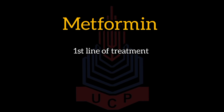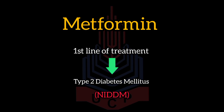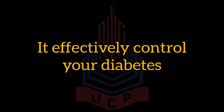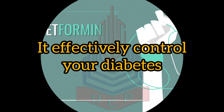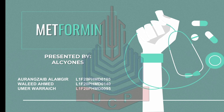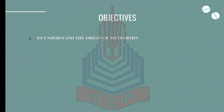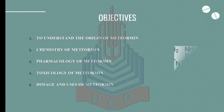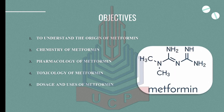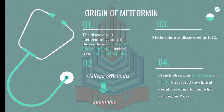Metformin is a first-line treatment in type 2 diabetes mellitus, the non-insulin-dependent diabetes mellitus. When taken correctly, metformin effectively controls your diabetes. Today, Walid Ahmad with group mates Aurangzeb Alamgir and Umar Wadaich from the University of Central Punjab will tell you about metformin — its origin, chemistry, pharmacology, toxicology, dosage, and side effects.